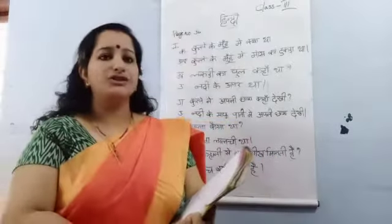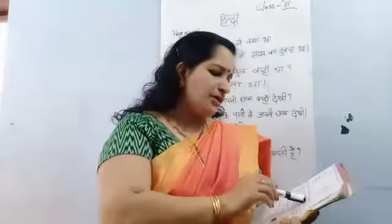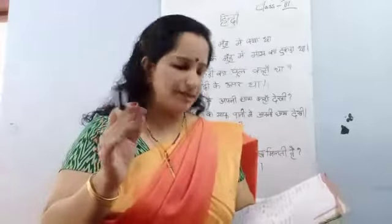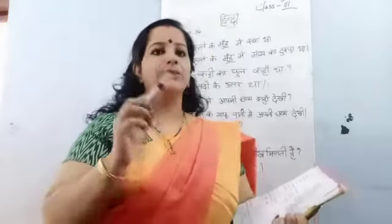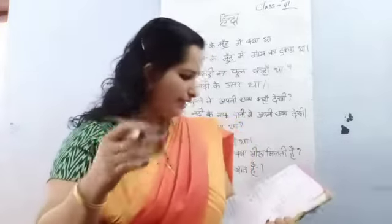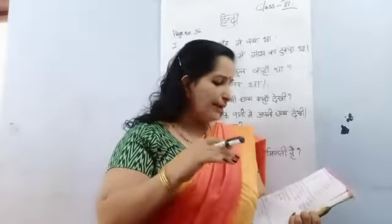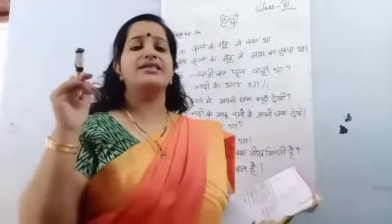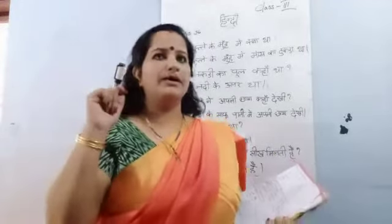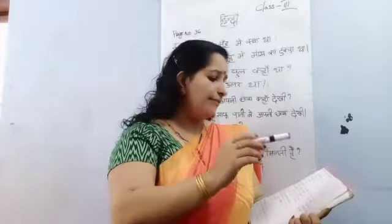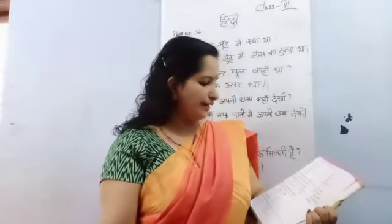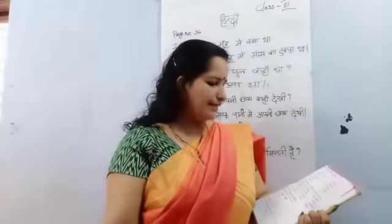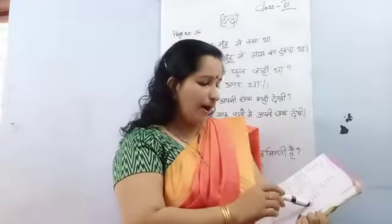Fourth question. Sahi shabd chungar uttar likhe — choose the correct answer. First one: Kutte ne paani mein apni chaya dhekhi — he saw his shadow in the river, the clear water. Chaya means shadow. Next one: Kutte ne kutte dash dhekhi — he barked and dropped it.